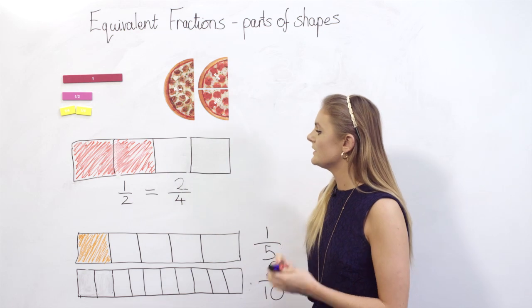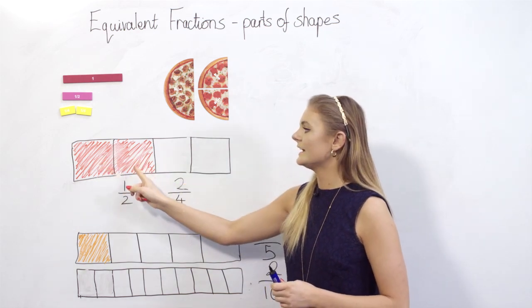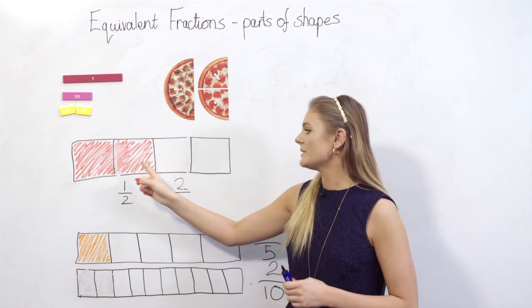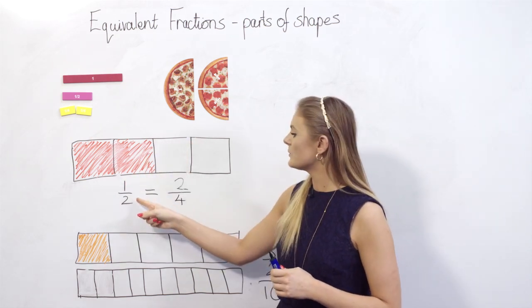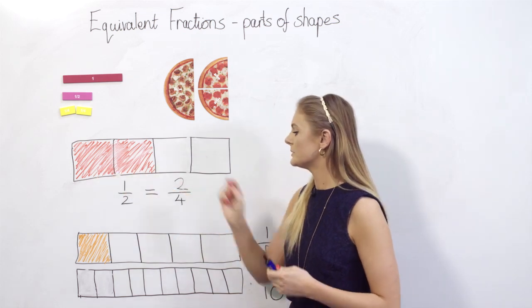In doing so you can see that I've got two quarters here and that two quarters is the same as one half. I haven't had to do any more shading, so we can see that one half is equivalent to two quarters.